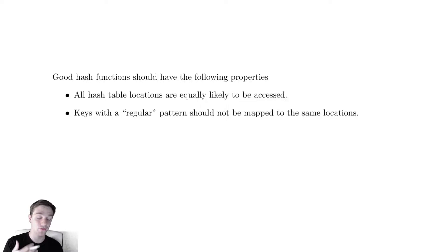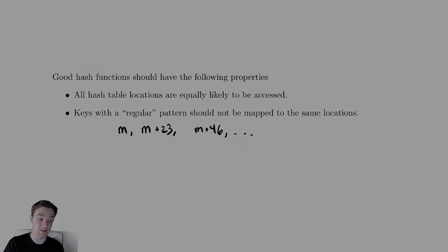The other thing is that if your keys form some regular pattern like we saw earlier—like m, then m plus 23, then m plus 46—you would want that all of those keys get mapped to different locations. Those are the two properties that we really want to drive home in any hash function that we choose. We'll have to keep that in mind whenever we're talking about how we would use these things.